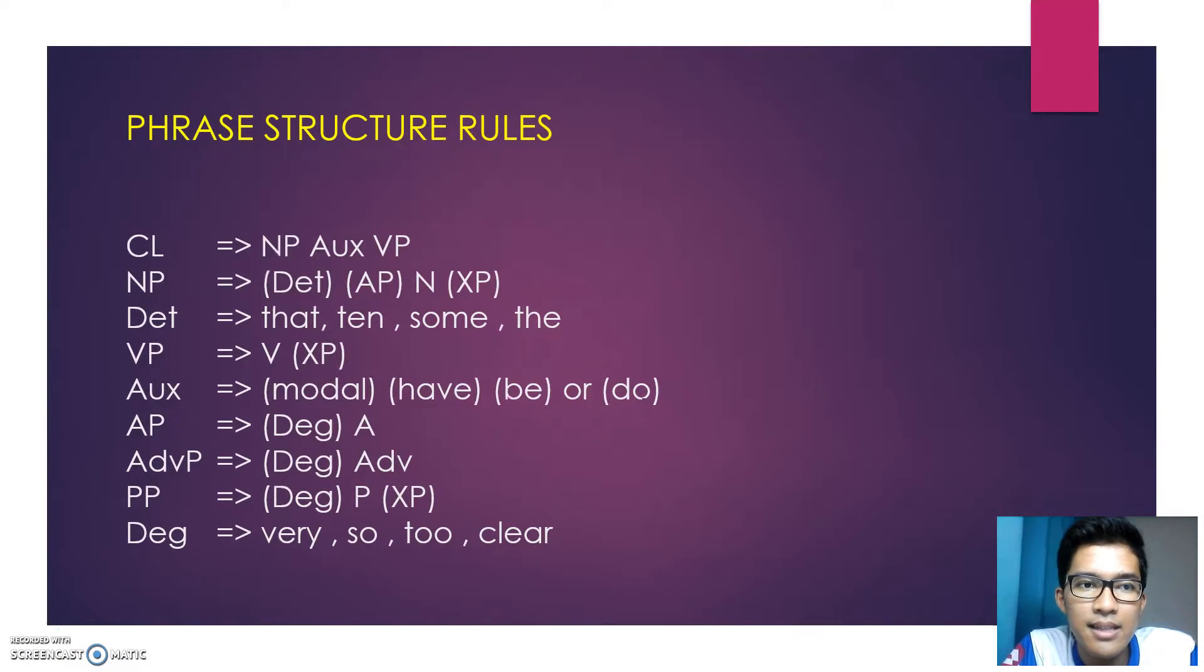Next, this is the summary for the phrase structure rules. In the bracket it means that it is optional. So for example, for NP we might have the determiner or we might have adjective phrase, or we might have another phrase, for example verb phrase, and they are under noun phrase.